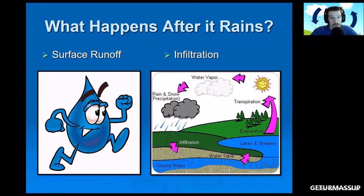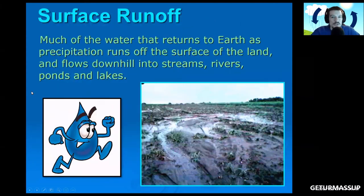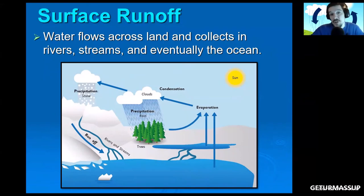But what happens after the rain falls down? There's two things. One, it can actually run off. The other thing is it can infiltrate. First, let's talk about runoff. So much of the water that returns to the earth as precipitation actually runs off of the surface. This water can flow downhill into streams, rivers, ponds, and lakes. So this is all considered runoff. If you want to add runoff to your notes, I would write down: water flows across land and collects in rivers, streams, and eventually the oceans.